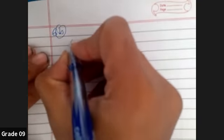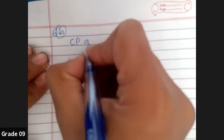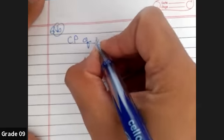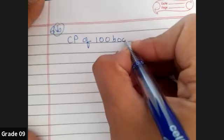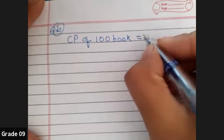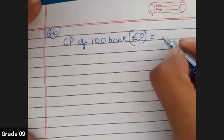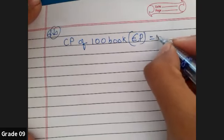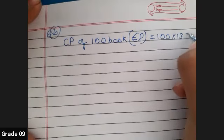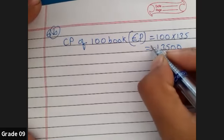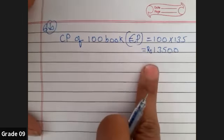So your question has begun like this. Cost price of 100 books has been given. So in bracket you can write CP equals 100 into 135. So definitely, 13,500 is your cost price.